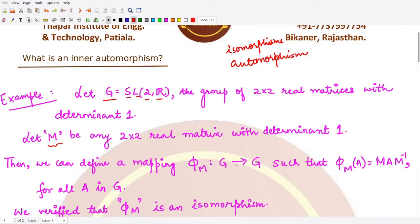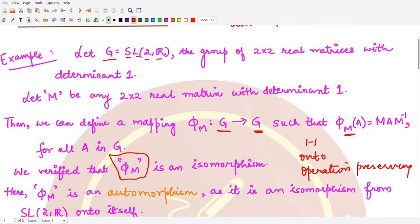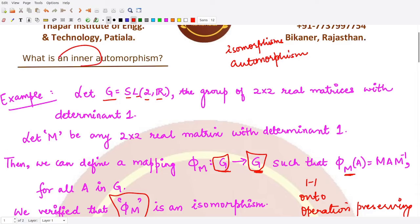Here we are fixing m and defining this mapping. This mapping is defined from the same group to the same group, so it is an automorphism. In previous videos, I proved that phi_m is an isomorphism — it is one-to-one, onto, and operation-preserving. Since it maps from the same group to itself, it is an automorphism as well.